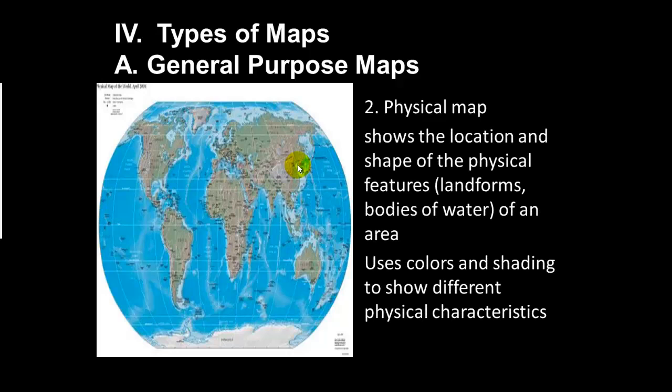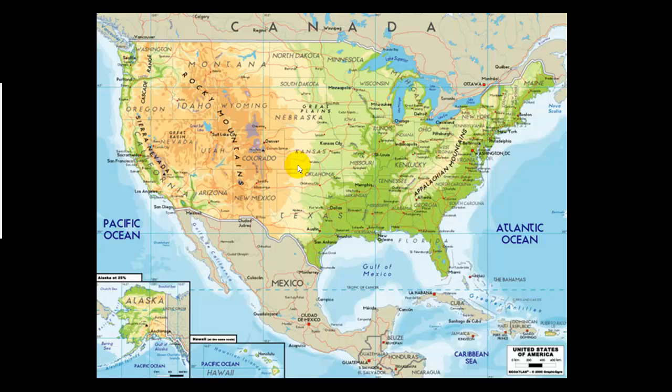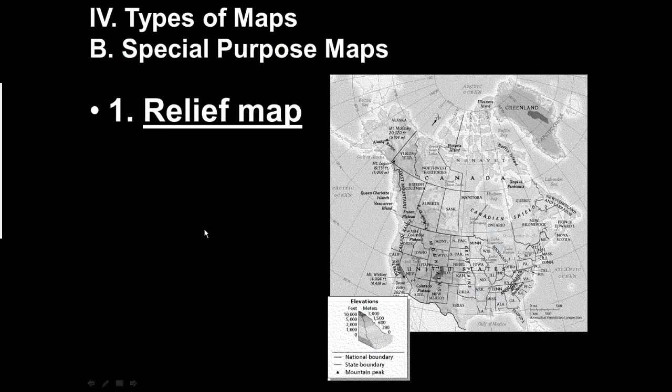Once again, the physical map shows the location and shape of physical features, different landforms, and bodies of water on the area. As you can already tell, physical maps use color and shading to show the different physical characteristics. This is a close-up picture of a physical map of the United States. It shows the different colors reflecting the different areas of vegetation in the southeastern portion of the United States, the midwestern, and the Pacific United States.